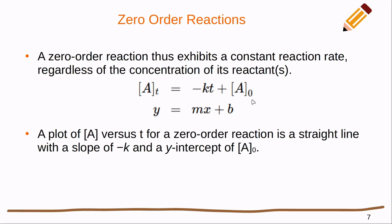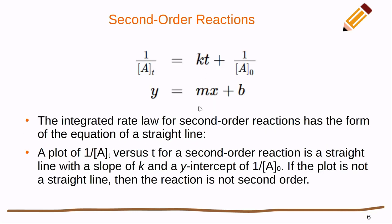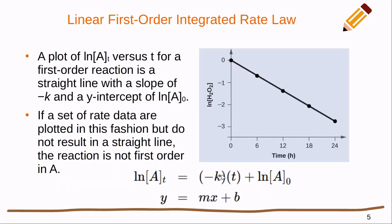For the zero order, this is the simplest of all the equations. The concentration at any given time equals negative kt plus the initial concentration. We can linearize that very simply: concentration is y, the slope is negative k, and the y-intercept is the initial concentration. It is important when looking at these slopes to realize whether it is negative k or positive k, depending on the order of the reaction.